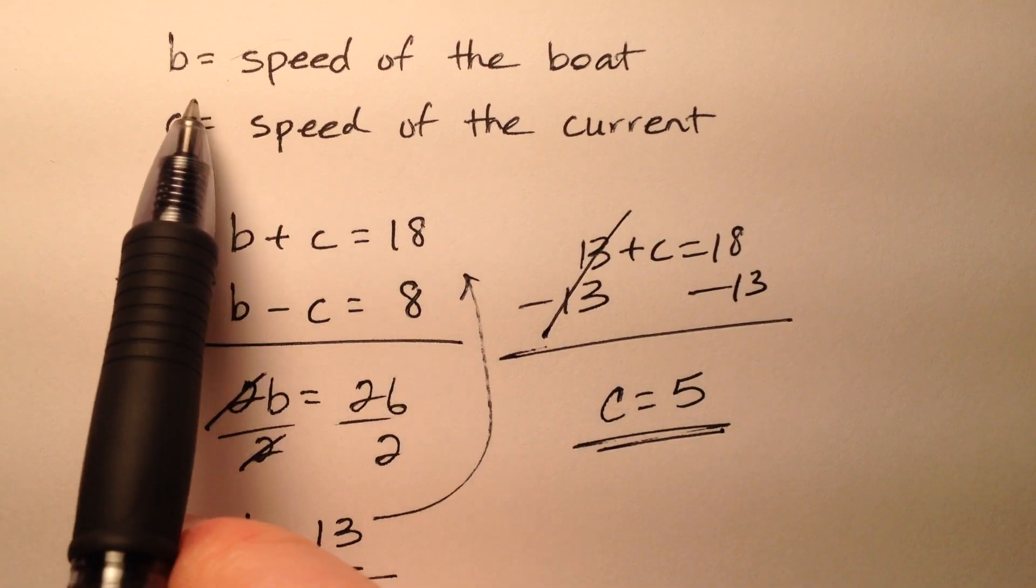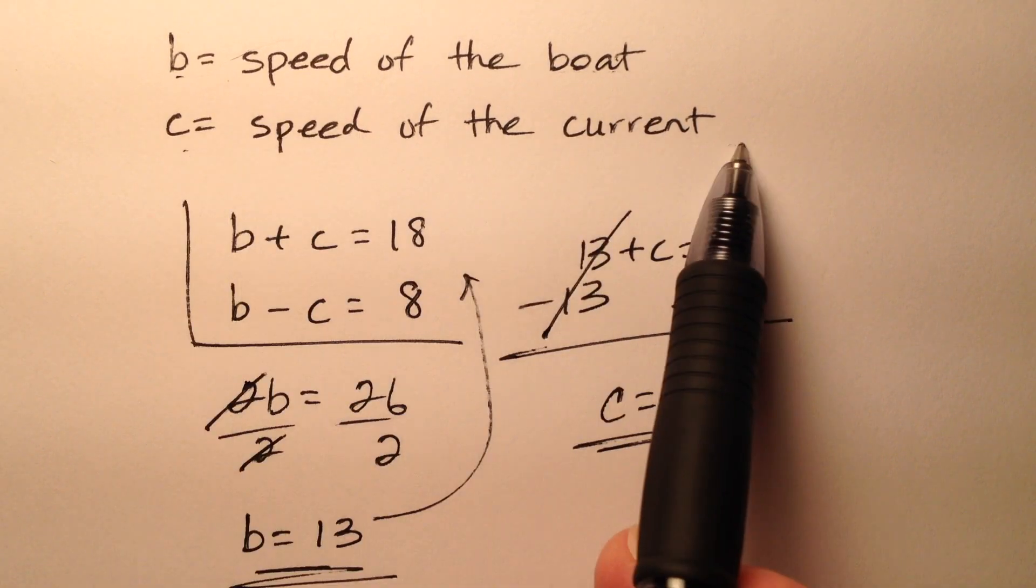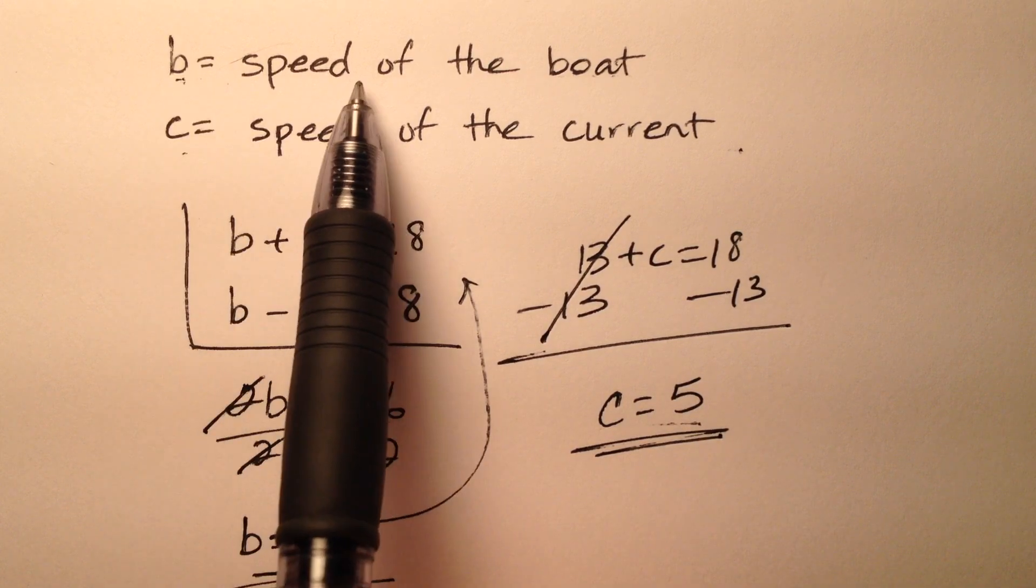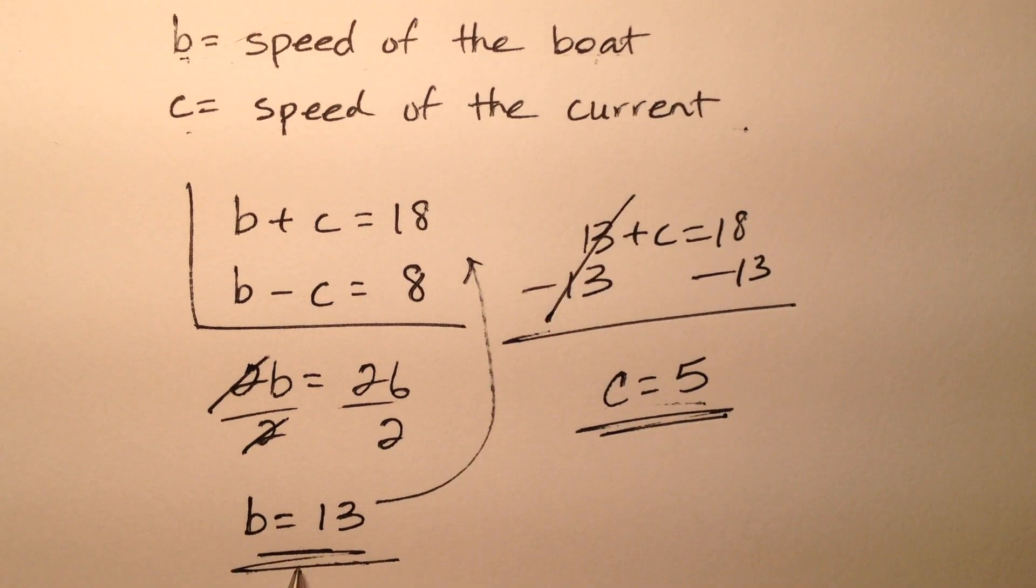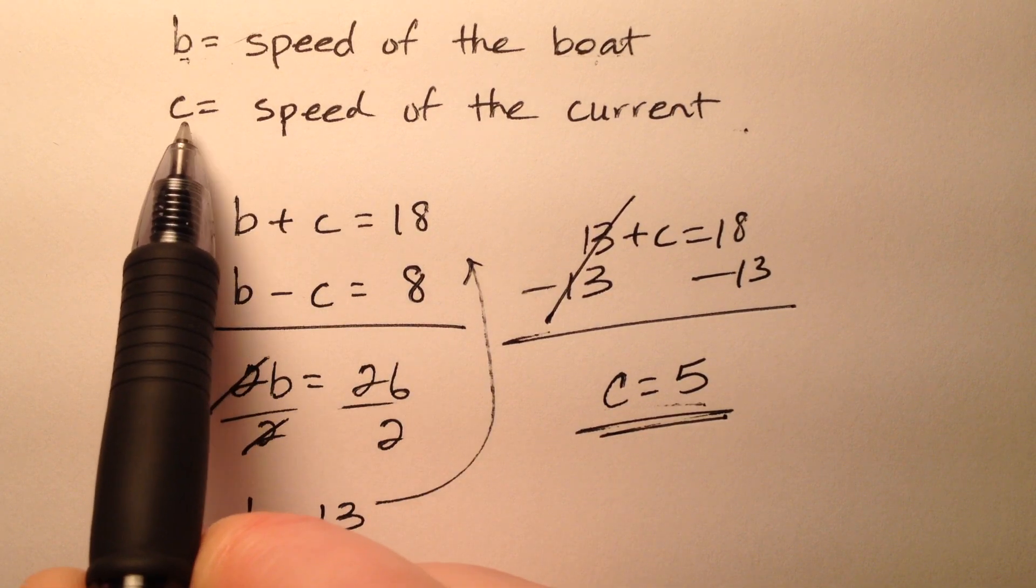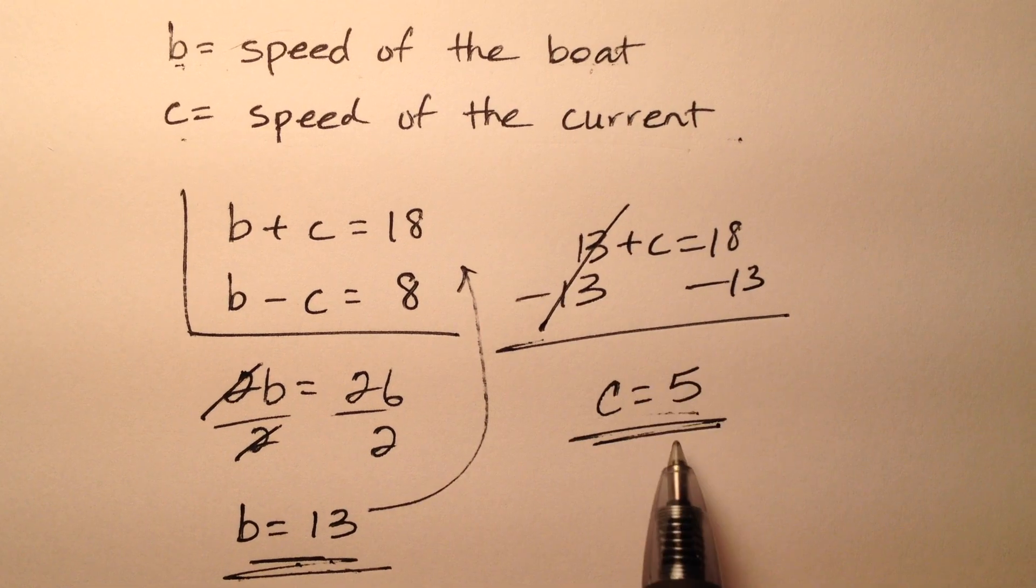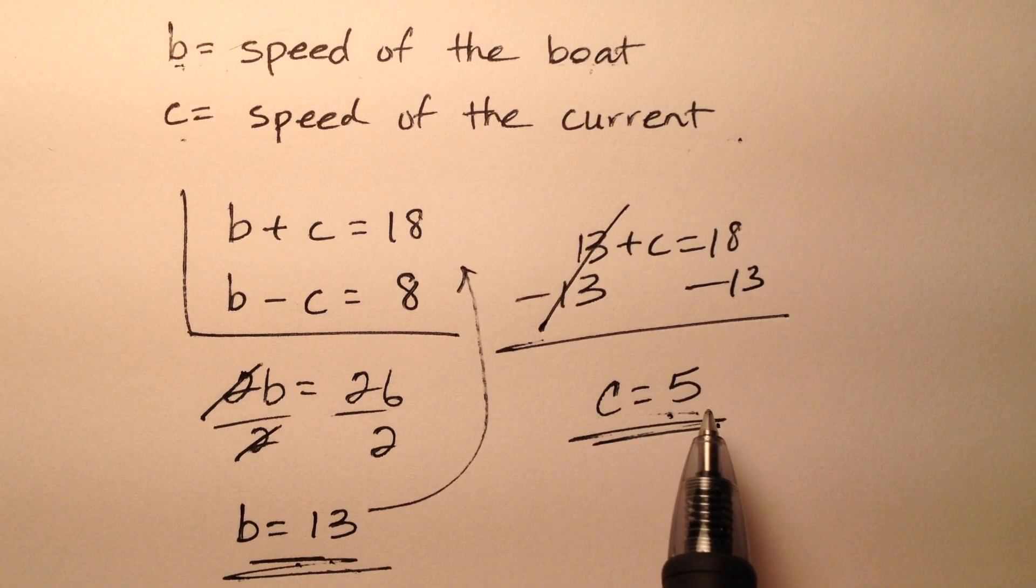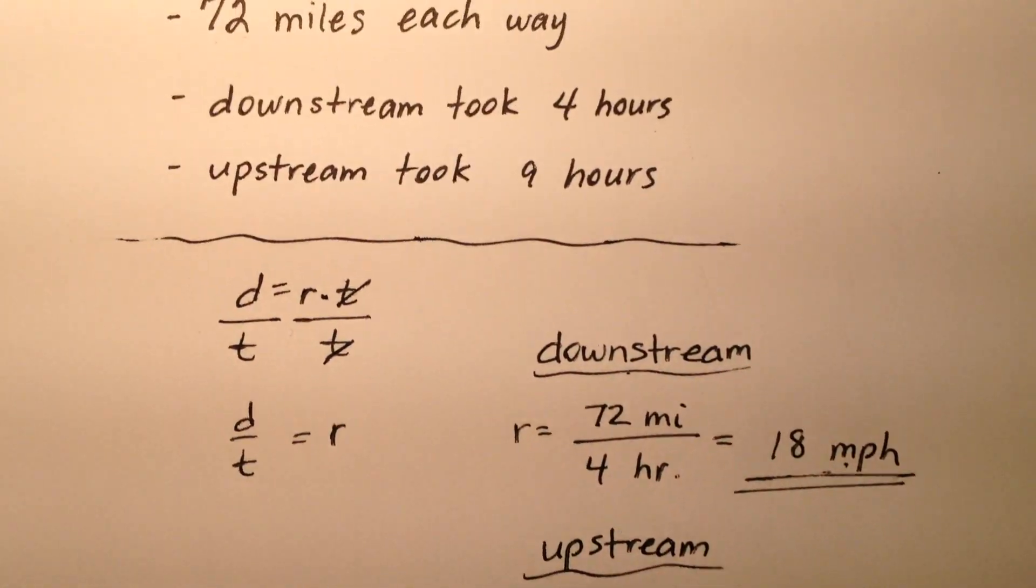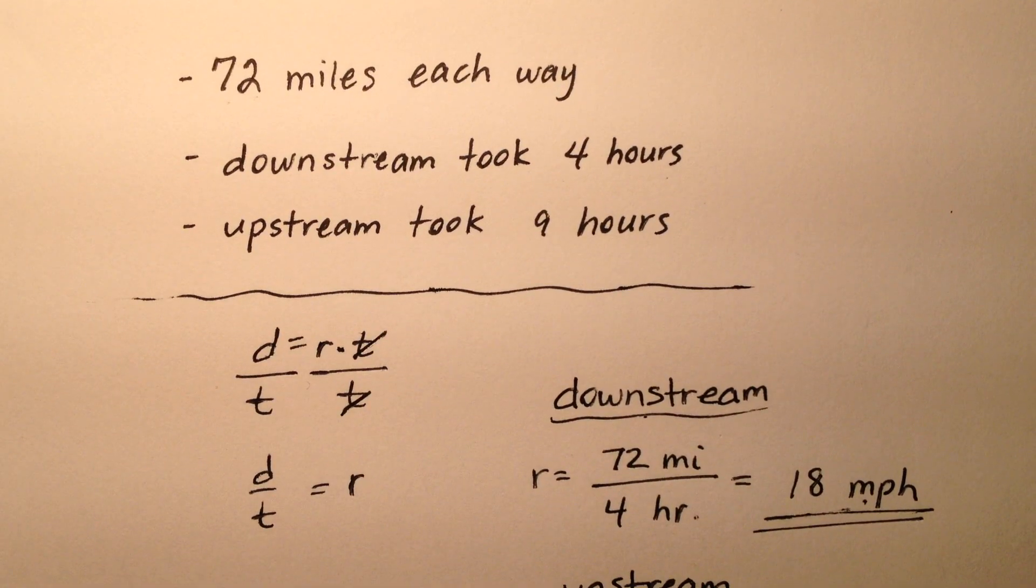So now we have our variable definitions we can look back to, and we have our values. So B, which was the speed of the boat, the speed of the boat was 13 miles per hour, and C, which is the speed of the current, the speed of the current was 5 miles per hour. And that matches up nicely with this initial information that we were given.